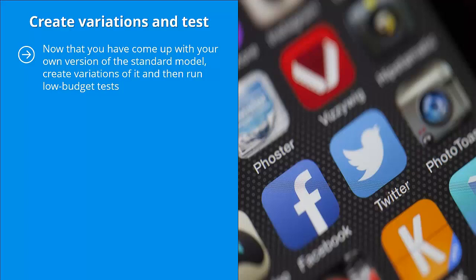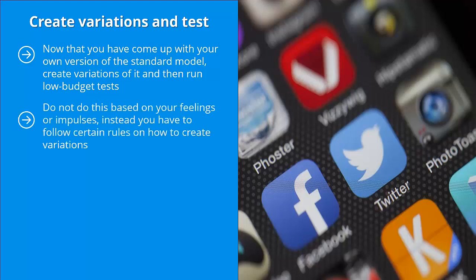Create variations and test. Now that you have come up with your own version of the standard model, create variations of it and then run low budget tests. Do not do this randomly or based on your feelings or impulses. Instead, you have to follow certain rules on how to create variations, otherwise you wouldn't know which part of the ad accounts for its greater success.